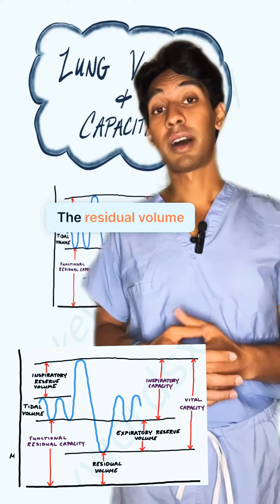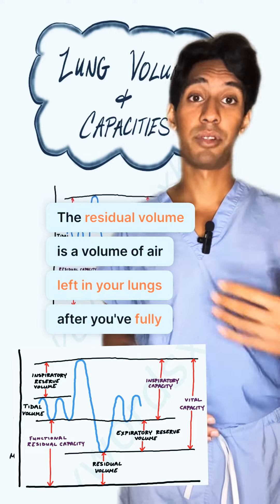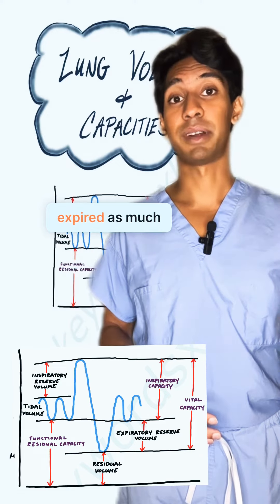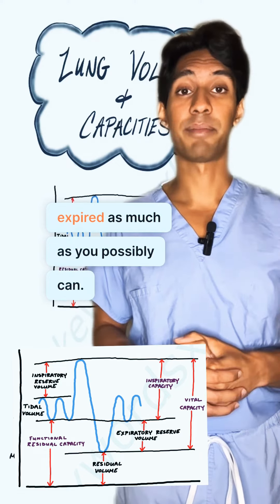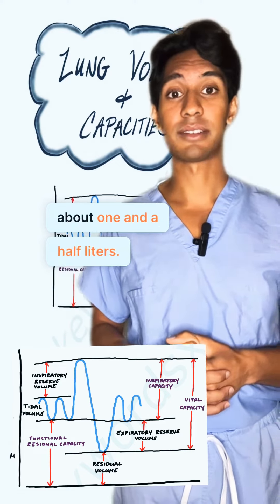The residual volume is the volume of air left in your lungs after you've fully expired as much as you possibly can. This is usually about one and a half liters.